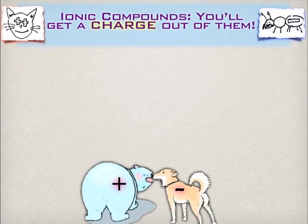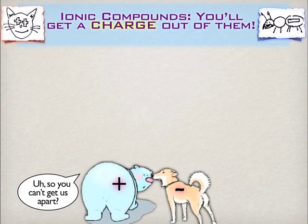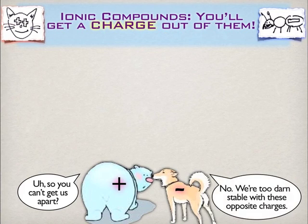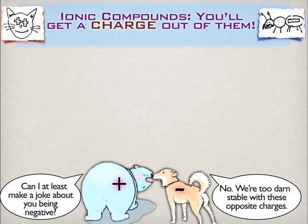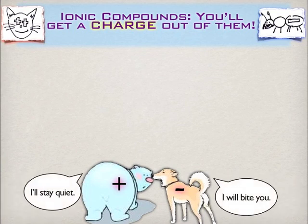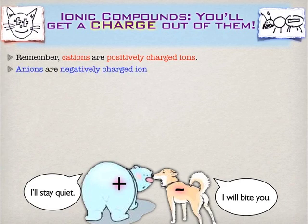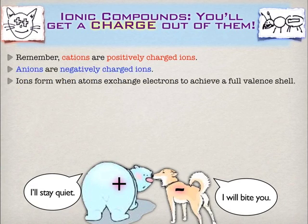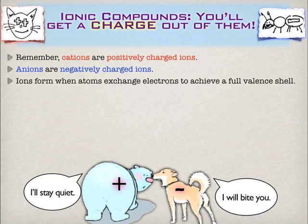Our old friends Question Bear and Answer Dog are back, and last episode they became ions and got stuck together. Remember, cations have the positive charge, anions have the negative charge — plus a cat-anion. Ions are going to exchange electrons to get those full valence shells, to become isoelectronic with noble gases, and when they do, the opposite charges will be attracted to each other, and that's where ionic compounds come from. When the polar bear and the dog are attracted to each other, they form what's called an ionic bond.